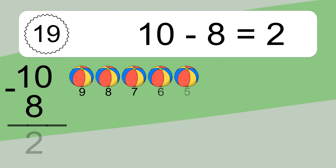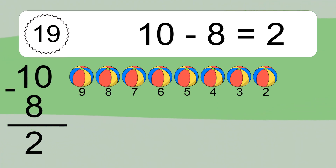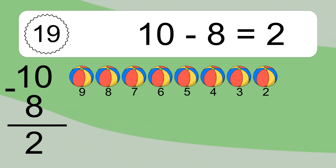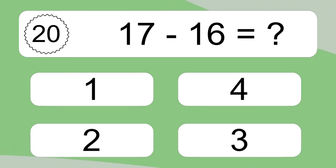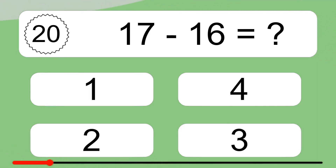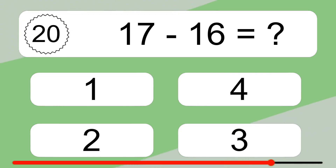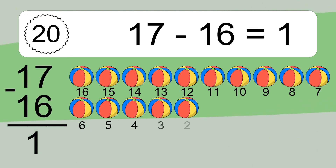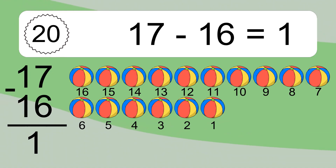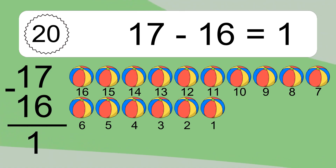3 minus 2 equals 1. Let's count it: 2, 1. 10 minus 8 equals what? 10 minus 8 equals 2. Let's count it: 9, 8, 7, 6, 5, 4, 3, 2. 17 minus 16 equals what?